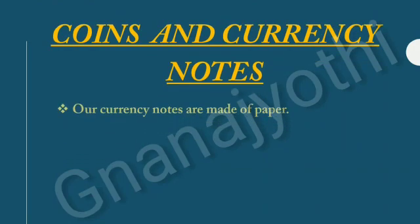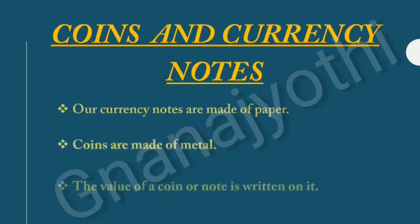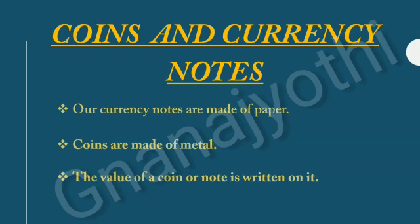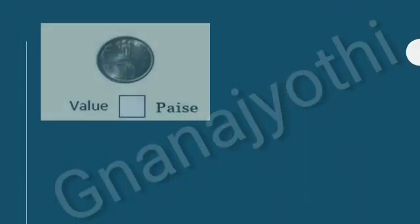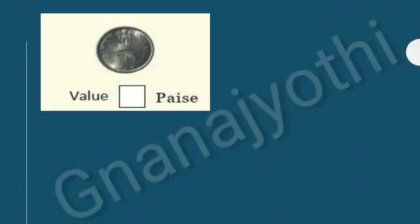Our currency notes are made of paper and coins are made of metal. The value of a coin or note is written on it. Now let us look into coins and notes. Look at this picture, students.